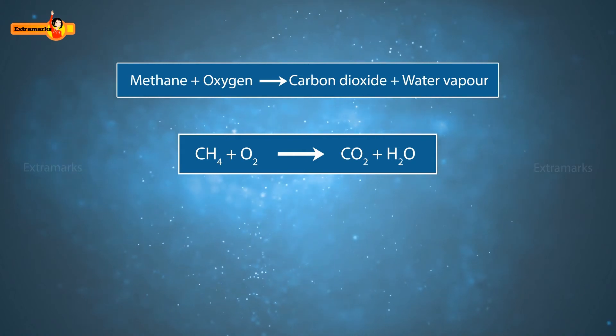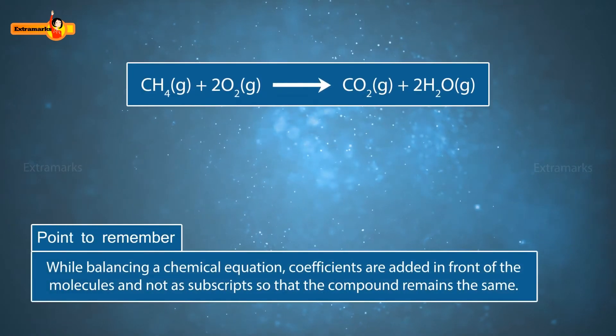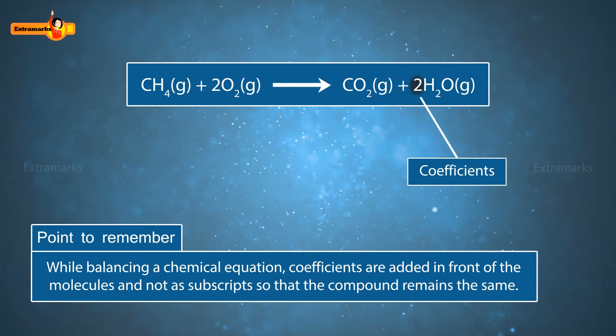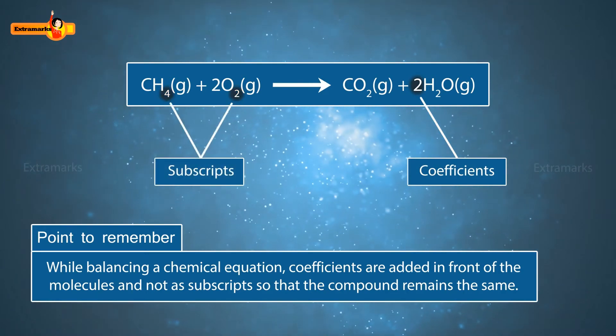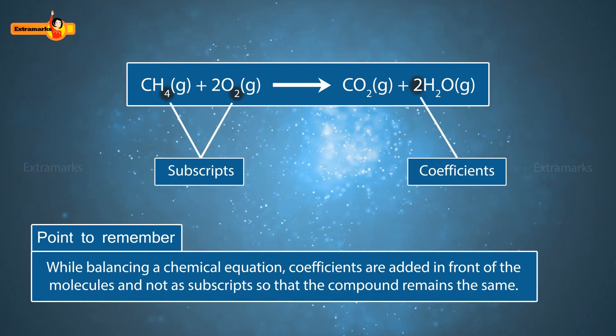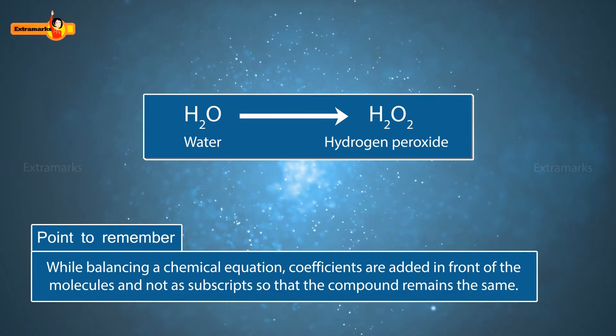Let us learn how to balance a chemical equation. While balancing a chemical equation, it must be taken care that the coefficients are added in front of the molecules and not as subscripts so that the compound remains the same. For example, on adding 2 to the subscript of oxygen in water, it will change water to hydrogen peroxide.